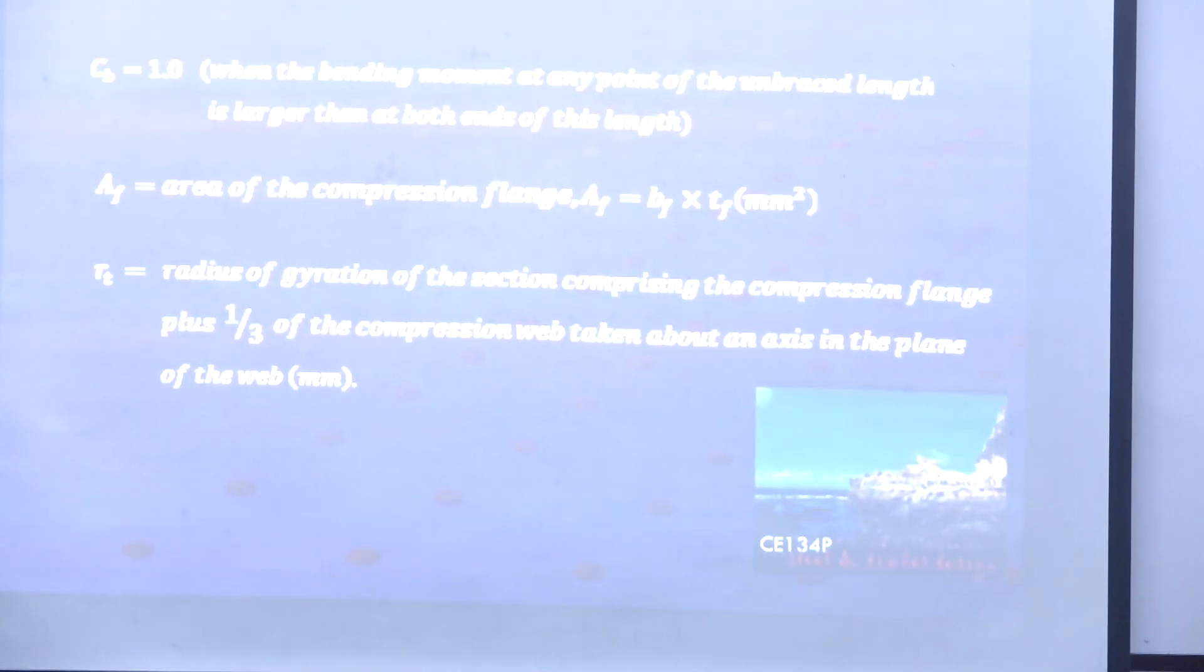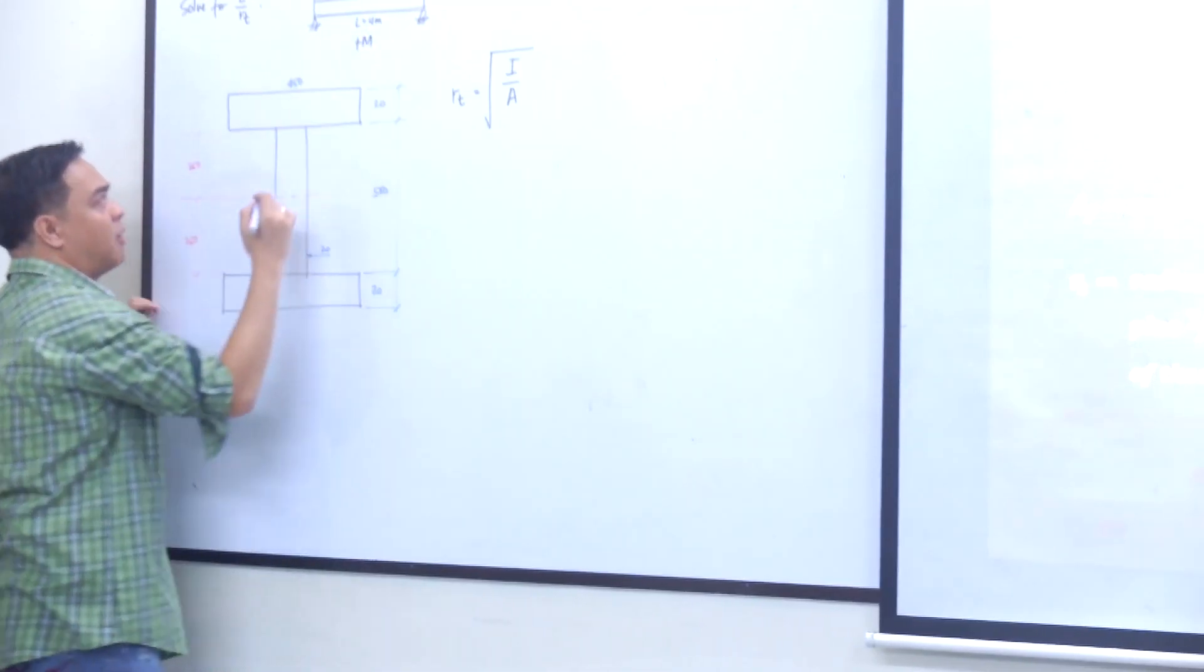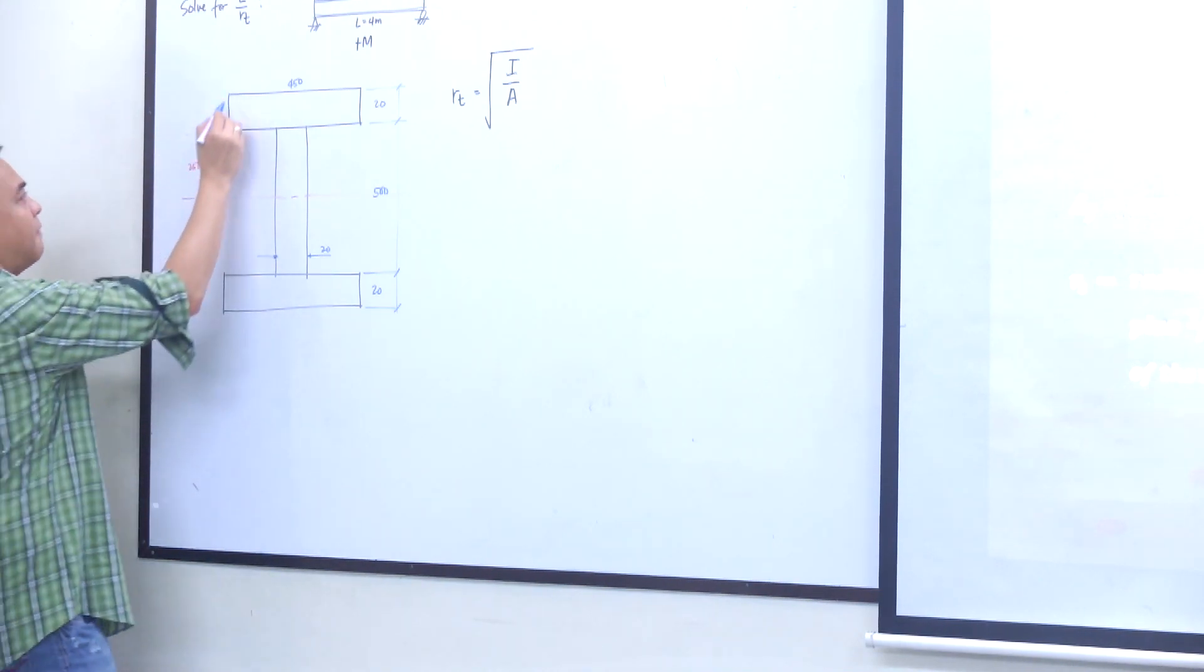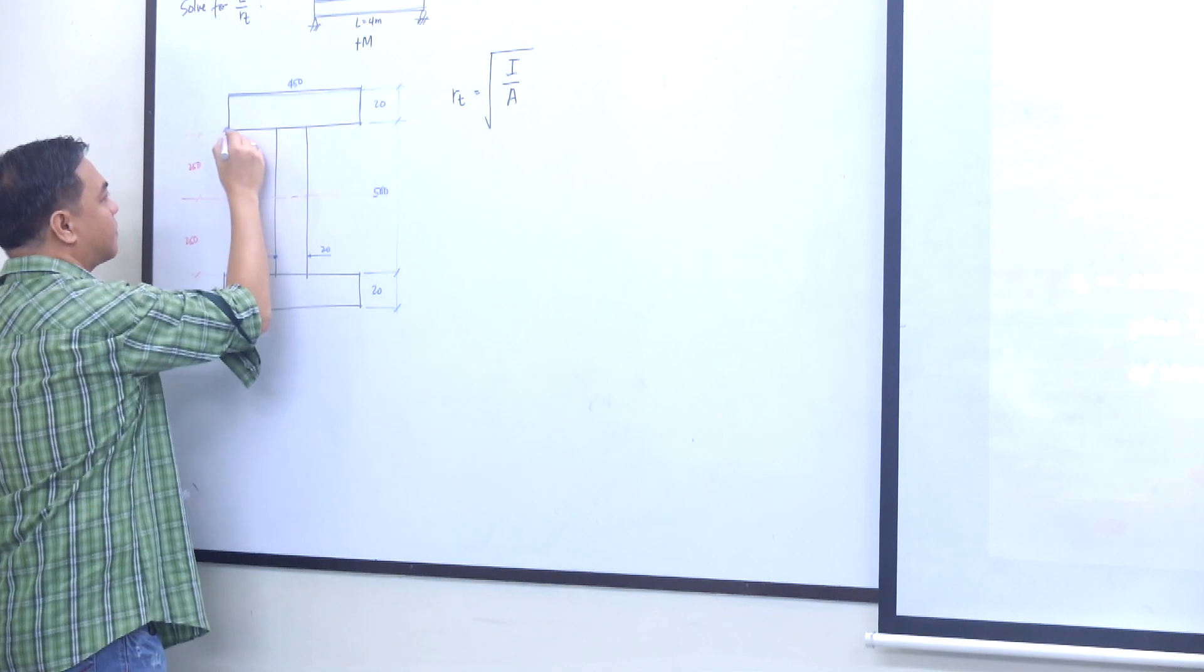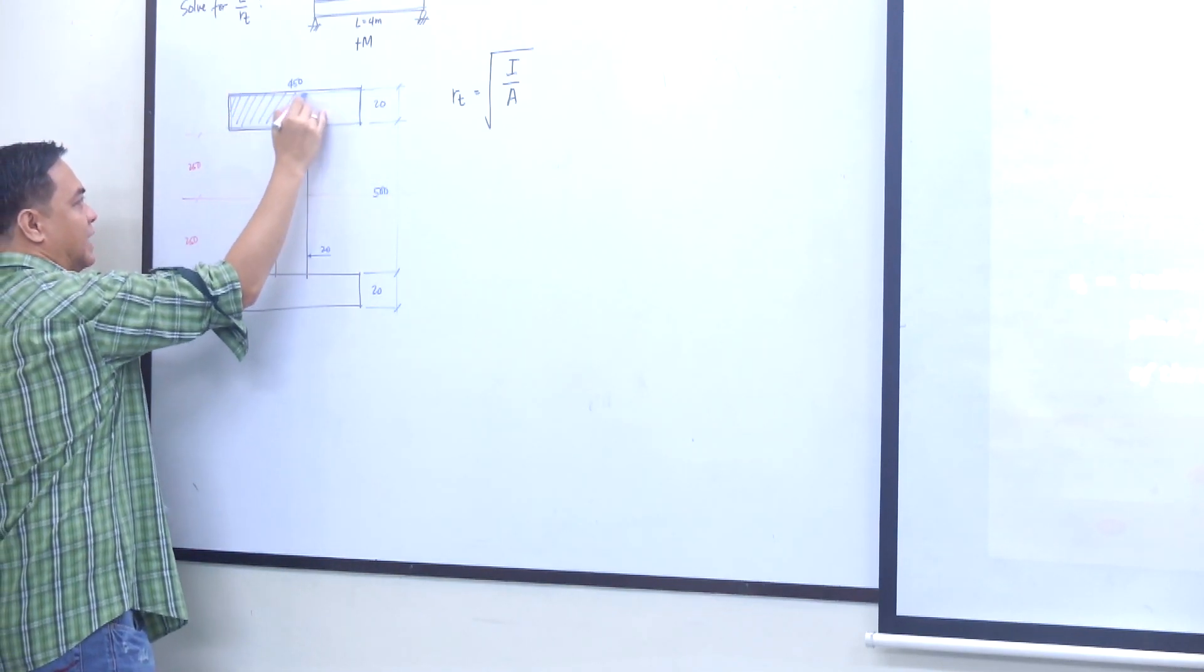For this case, where is the compression flange? For a positive moment, the compression side will be on the top. Therefore, the compression flange will be this. So this is the compression flange.